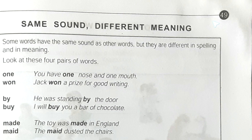Today we have done page number 49 from Junior English Book 1 and the topic was 'same sound, different meaning.' Next day we will do page number 50, where we will find the topic 'people who work.' Bye for today.